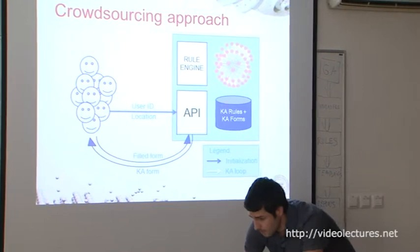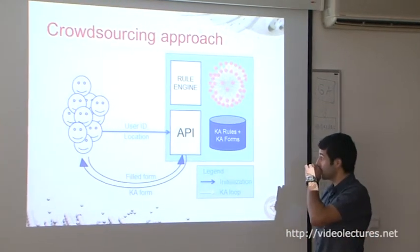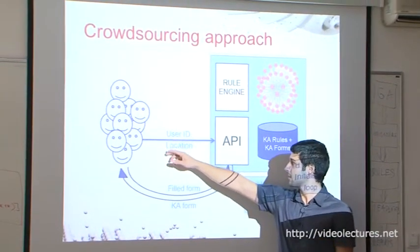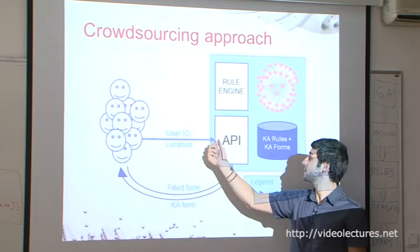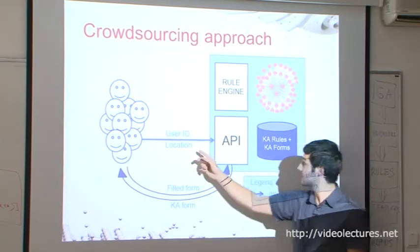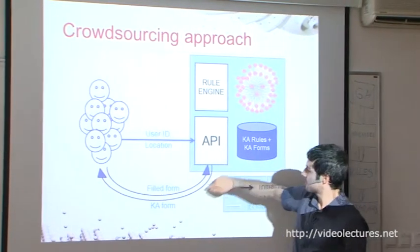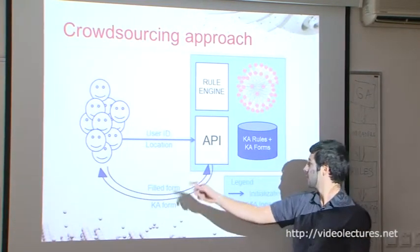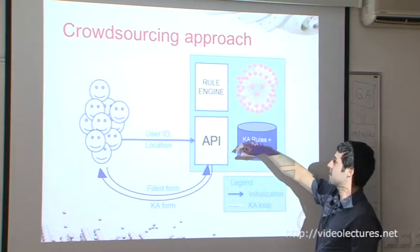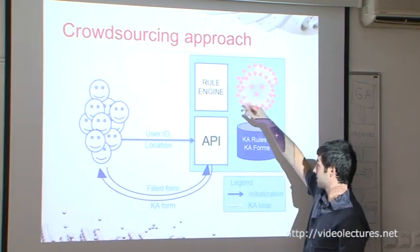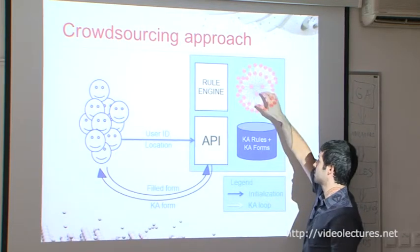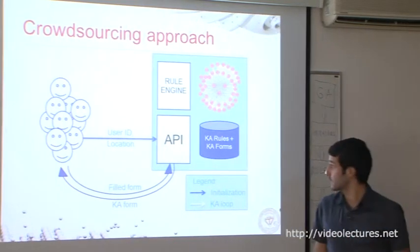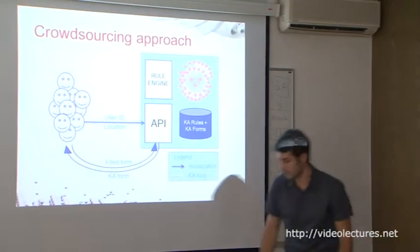With crowdsourcing, usually we have a crowd or users. In our case the system gets a user ID and location as well — it's not always like this. Then the system replies with some form which the user has to fill. It goes on and on, communicating via an API. In our case we have a rule engine, ontology, and rules which produce these forms. As I said, there are different approaches to knowledge acquisition — separated by prior knowledge: you can use a preexisting ontology or start from scratch. You can also do it on structured, semi-structured, or unstructured data — or crowdsourcing, which is what we are doing.